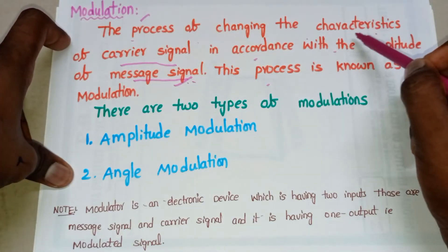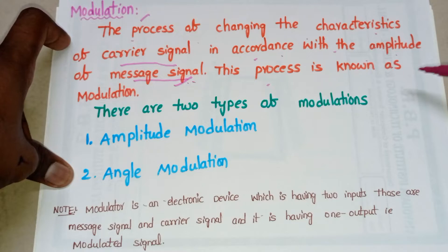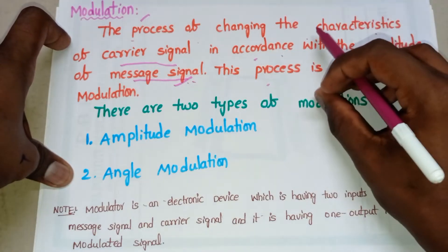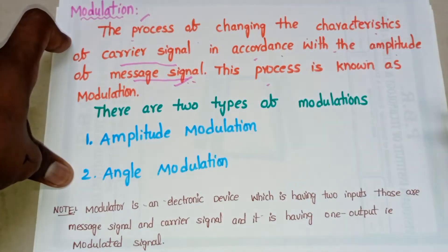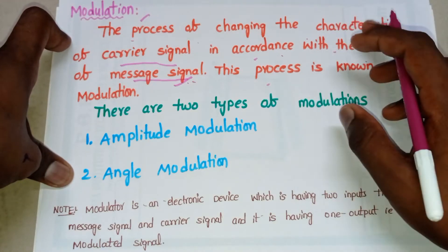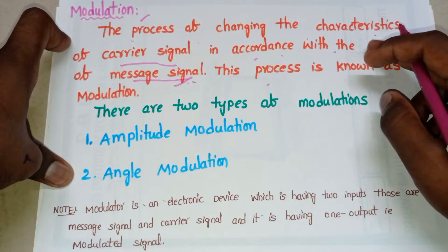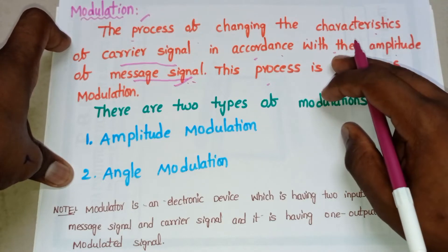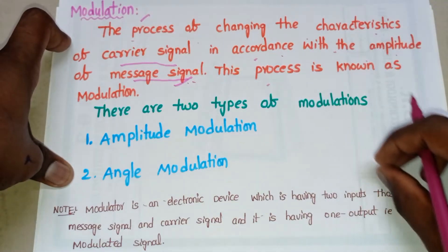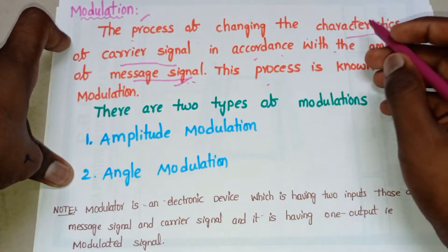The characteristics of the carrier signal change in accordance with the amplitude of the message signal. This means if the amplitude of the message signal is increasing, then the characteristics — which can be frequency, amplitude, or phase — also increase. If the amplitude of the message signal is decreasing, then the corresponding characteristics also decrease.